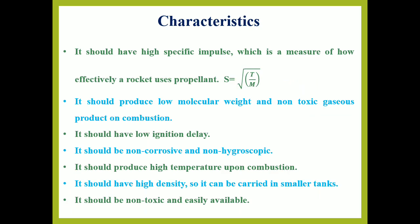Propellants should have certain characteristics. It should have high specific impulse. Specific impulse is a measure of how effectively a rocket uses the propellants — it tells about the thrust delivered divided by the rate of propellant which is burnt. The specific impulse mainly depends on the absolute temperature and molecular mass, and can be represented with the formula S = √(T/M).